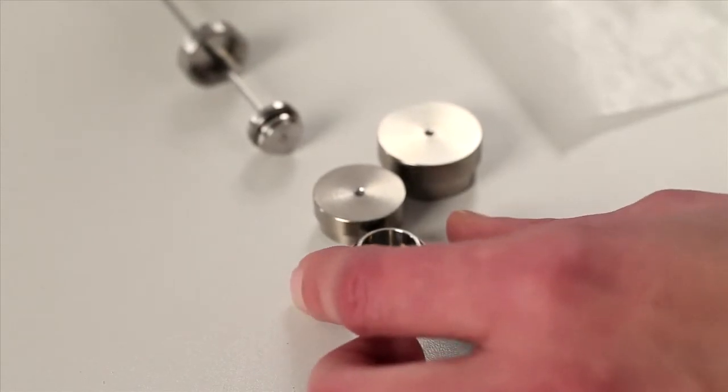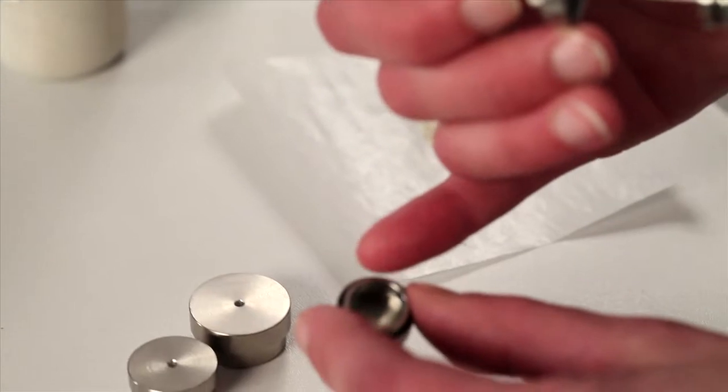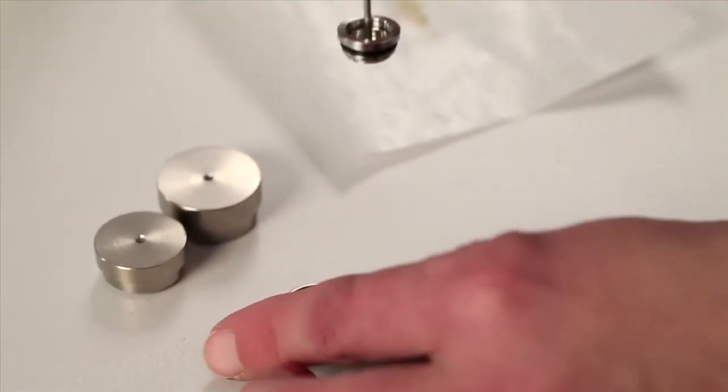Now, I'll show you how to load a batch ampule. This is a batch ampule that's been taken apart. Here's the outer compartment, the larger compartment, and here's the small inner compartment.